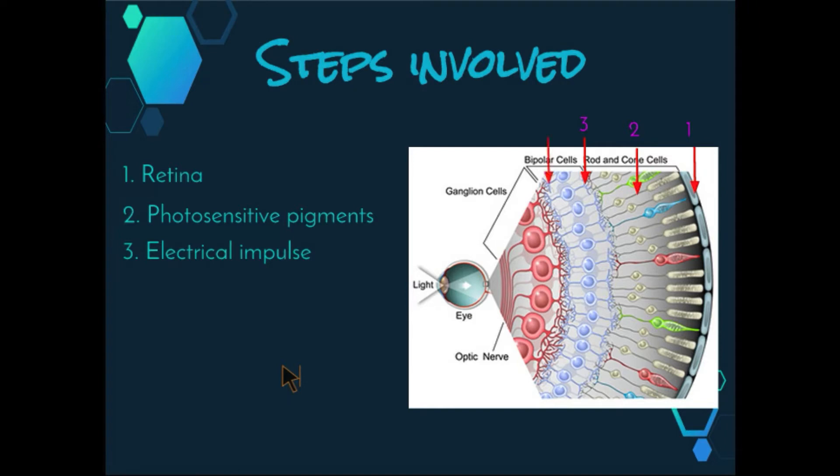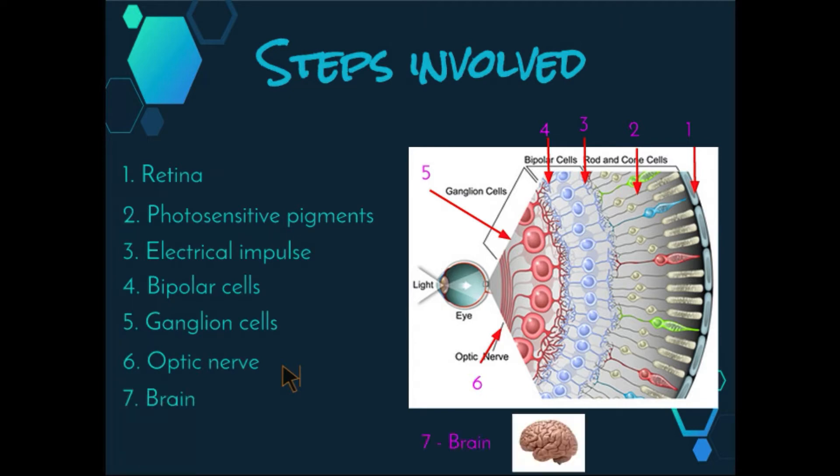The electrical impulse is transmitted to bipolar cells in the retina. The bipolar cells then stimulate other cells known as ganglion cells, whose processes or axons make up the optic nerve. And lastly, the fibers of the optic nerve carry the partly processed information to the brain, where it is then interpreted and created into an image.